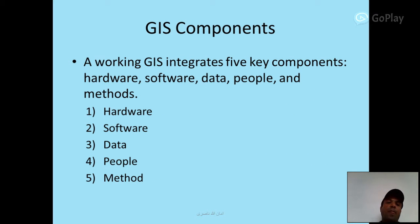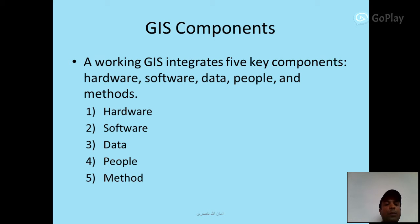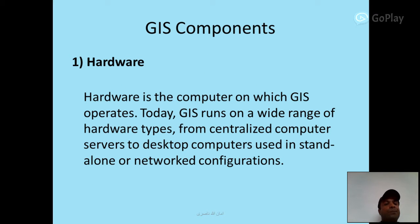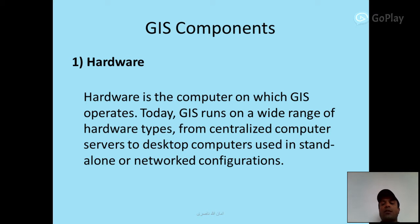GIS Components: a working GIS integrates five key components — hardware, software, data, people, and methods. First, hardware: hardware is the computer on which GIS operates. Today GIS runs on a wide range of hardware types, from centralized computer servers to desktop computers used in stand-alone or networked configurations.